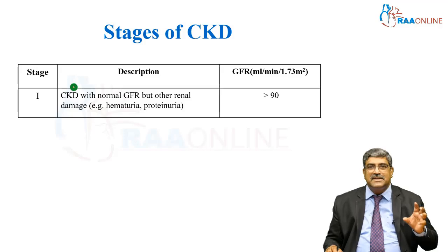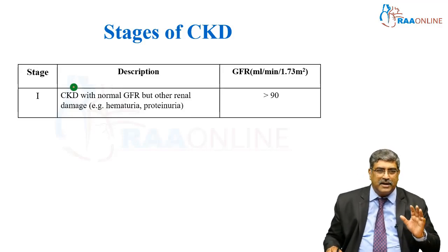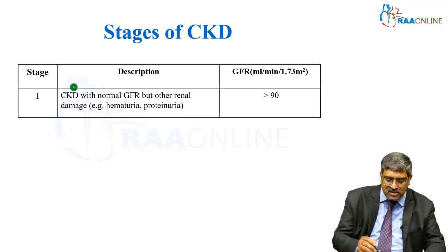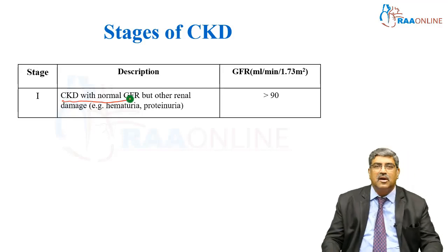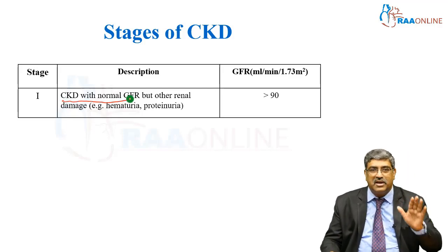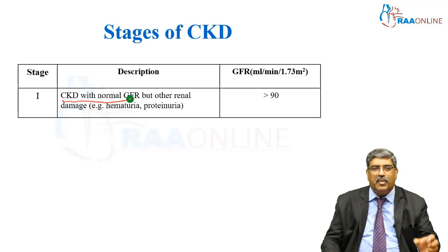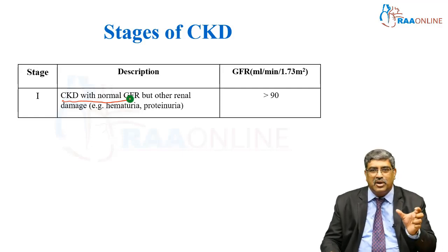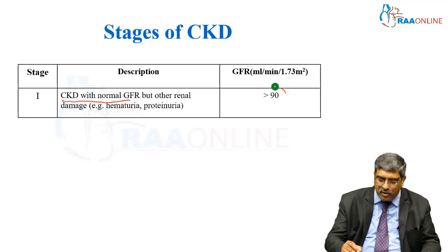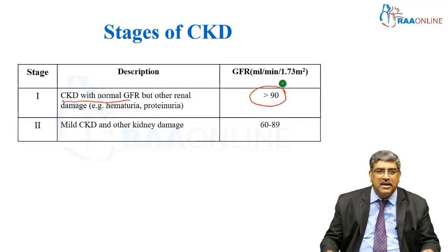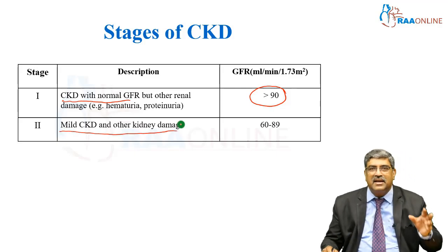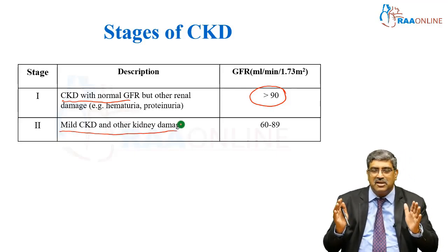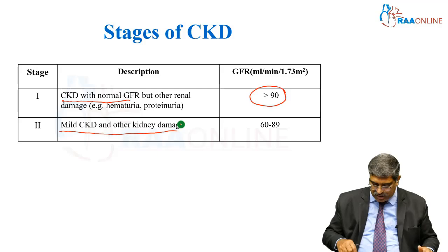Coming to the stages of chronic kidney disease: Stage one — there is chronic kidney disease but the glomerular filtration rate is normal; however, the patient may have proteinuria or hematuria, and the GFR is greater than 90. In stage two, there is mild kidney disease with other kidney damage, and the GFR is between 60 to 89.